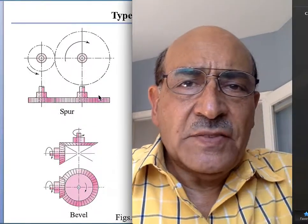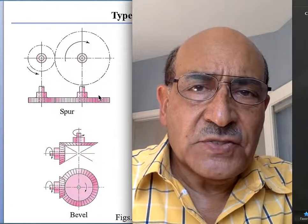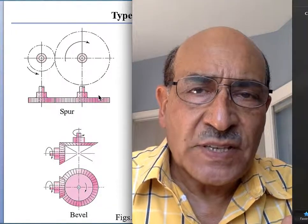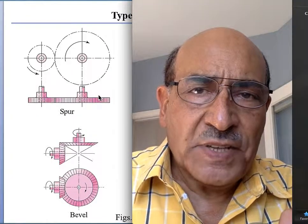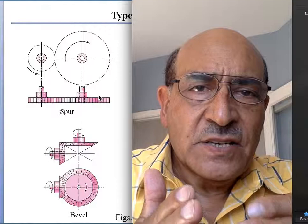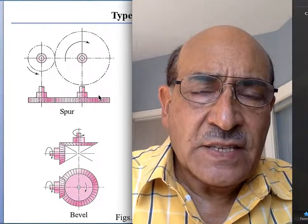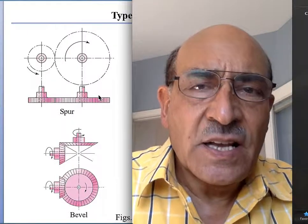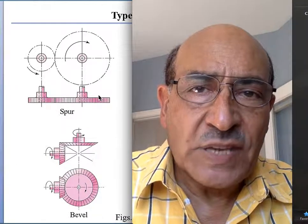When we have a power transmission system, we have an input axis and an output axis. The input axis and the output axis can be either parallel or they can be intersecting, and they can be at different levels if they are intersecting. In these configurations — either parallel or intersecting — we need to choose a particular type of gear.